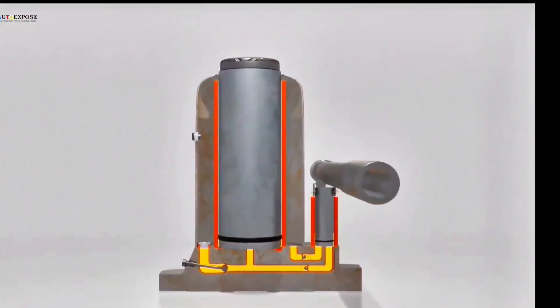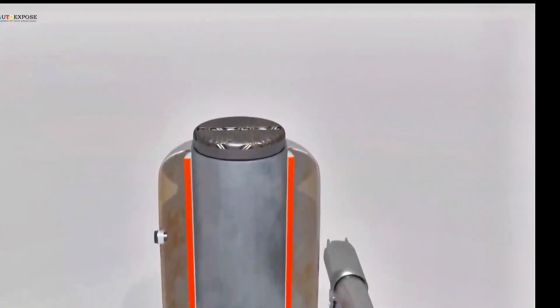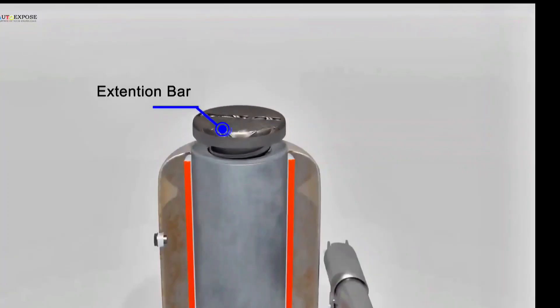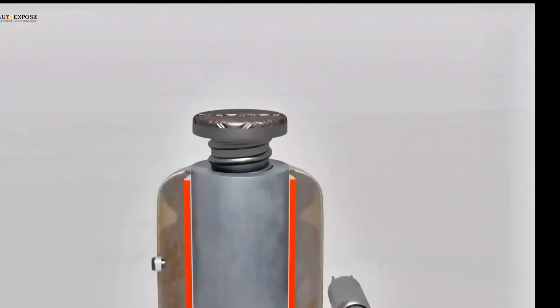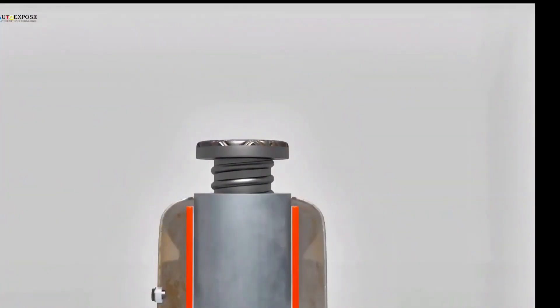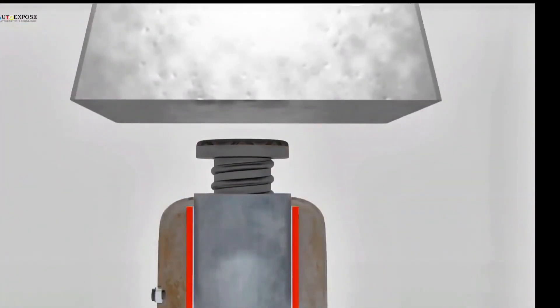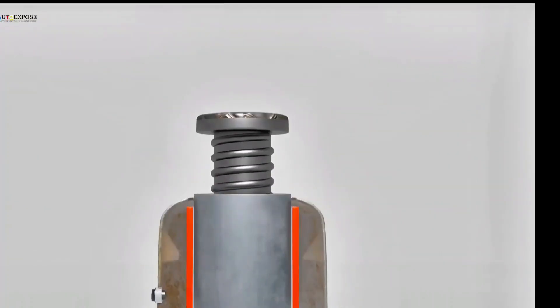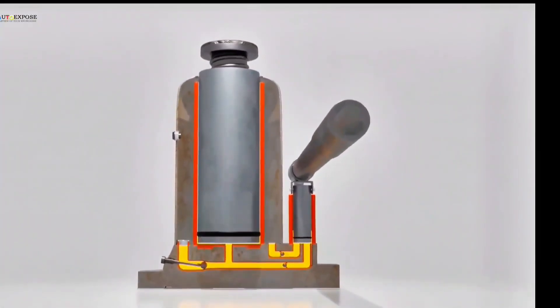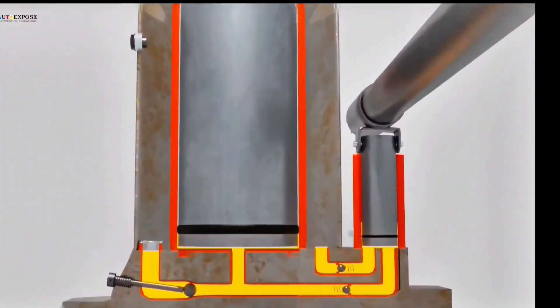Meanwhile, the output piston is connected to an extension bar. This is an additional component that increases the height of the jack. If the object to be lifted is higher, we simply turn the extension rod until it touches the object. Both pistons are equipped with seals. These seals prevent fluid leaks when the hydraulic jack is in operation.